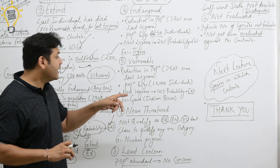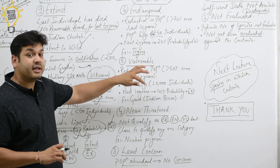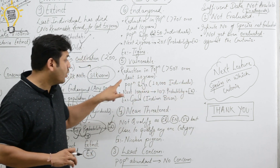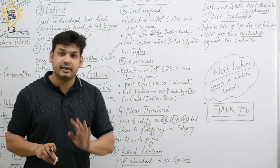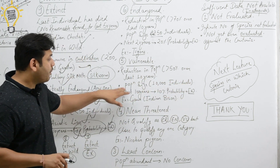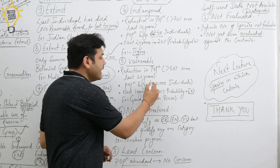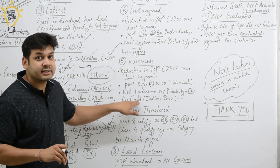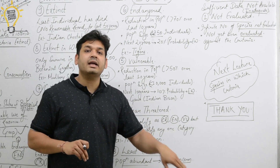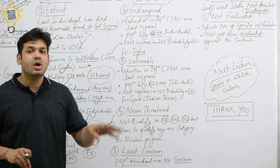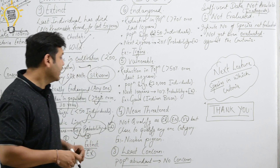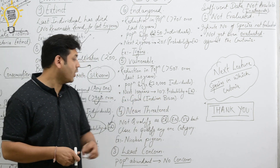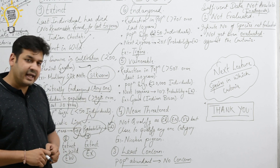Next is Vulnerable — the 5th category. The criteria are: reduction in population of more than 50% over the last 10 years; or population size less than 10,000 individuals; or a 10% probability of becoming Extinct in Wild within the next 100 years. Example: Gaur, that is the Indian Bison, is an example of a Vulnerable species.